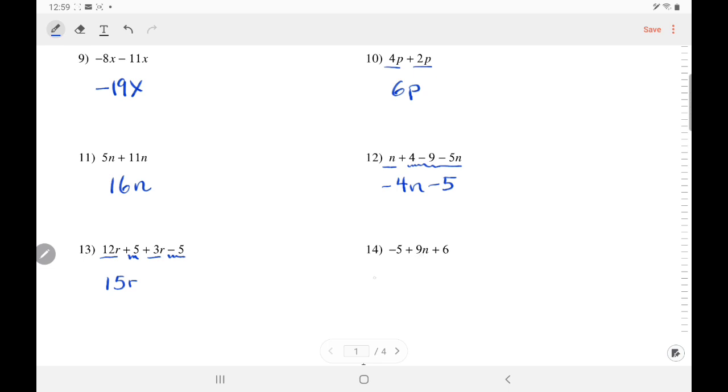Over here, let's write the 9n first. It stands alone. Then, add the negative 5 and the 6. So, negative 5 plus 6 is positive 1.